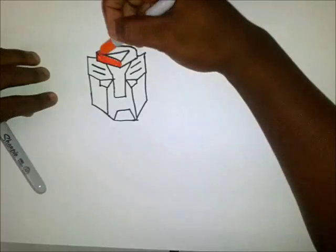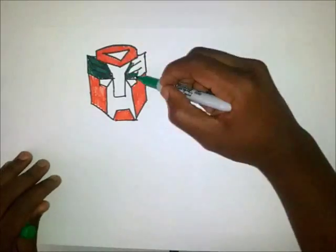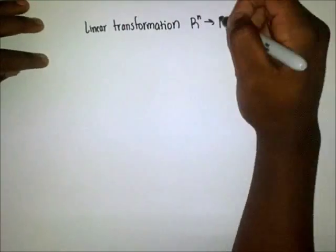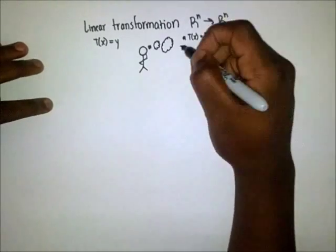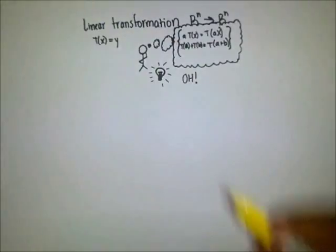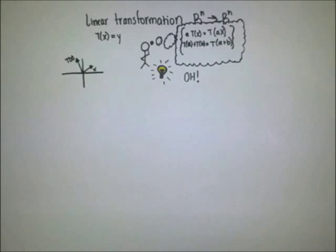Let's say you have a transformation — a linear transformation. Some matrix that when multiplied by a vector gives you another vector in the same space, usually pointing in a different direction than the original.